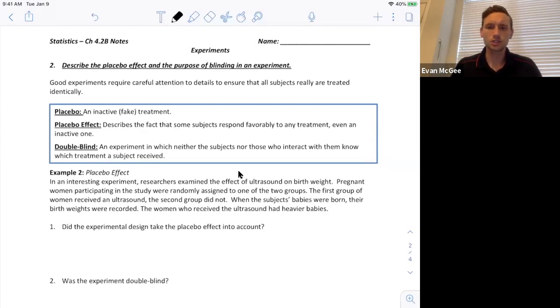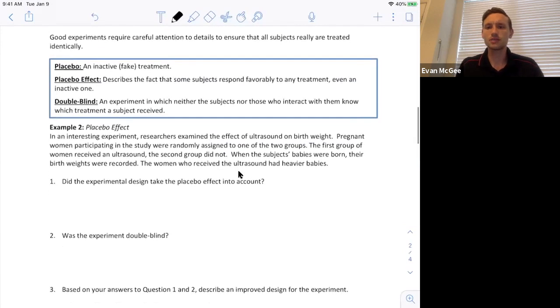So an interesting experiment. Researchers examined the effect of ultrasound on birth weight. Pregnant women participating in the study were randomly assigned to one of the two groups. The first group of women received an ultrasound, the second group did not. When the subjects' babies were born their birth weights were recorded. The women who received the ultrasound had heavier babies. So the reason they're talking about the weights of the babies is because they use weight to determine the health of the baby. So heavier babies tend to be healthier.